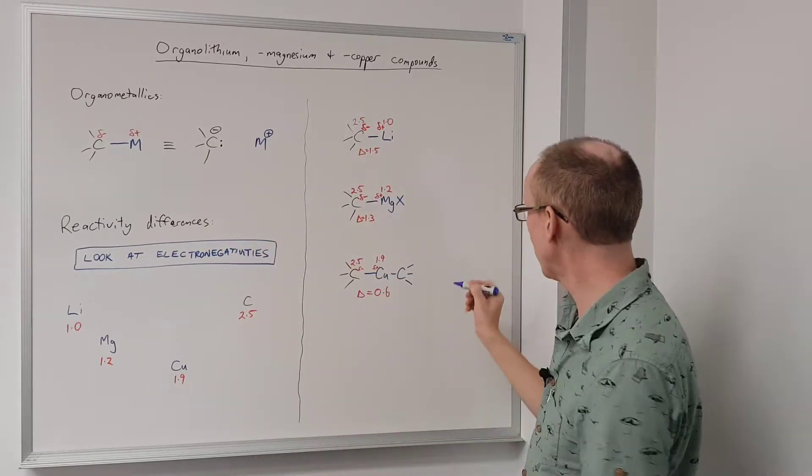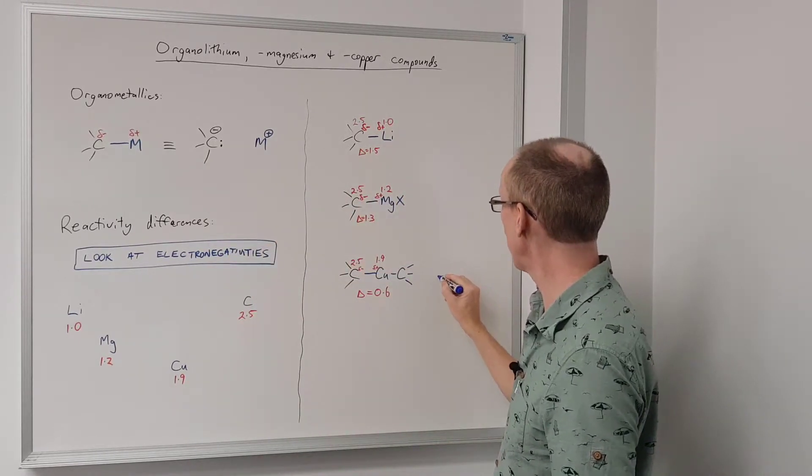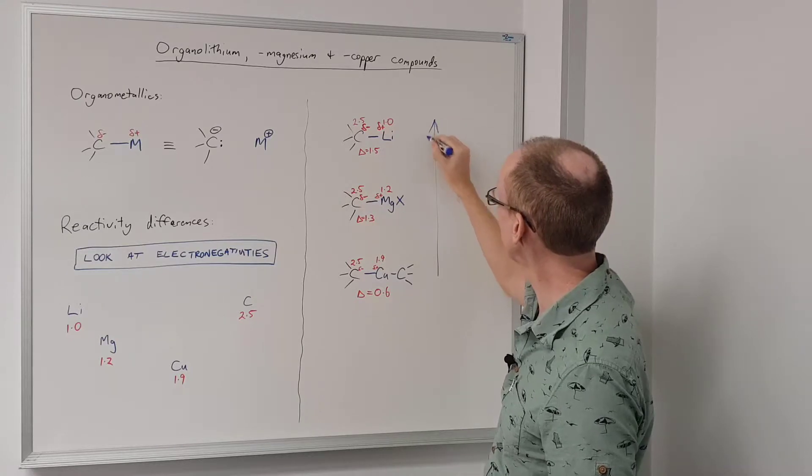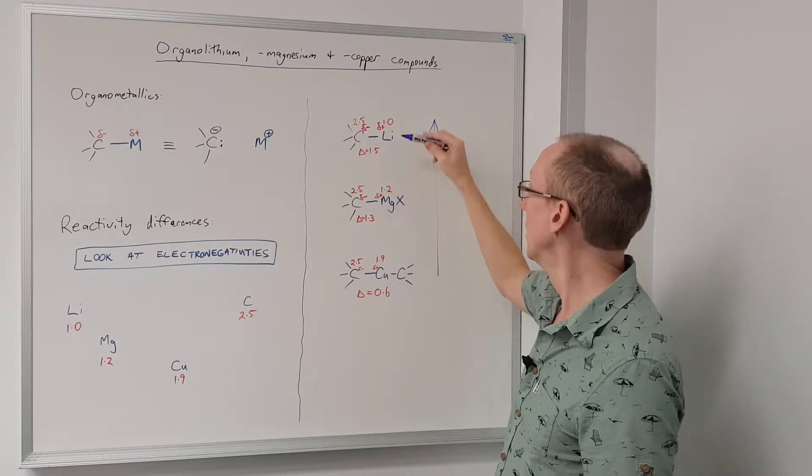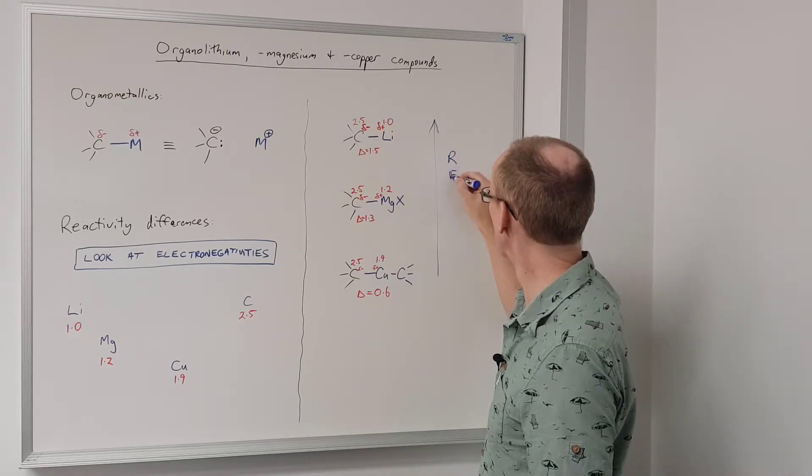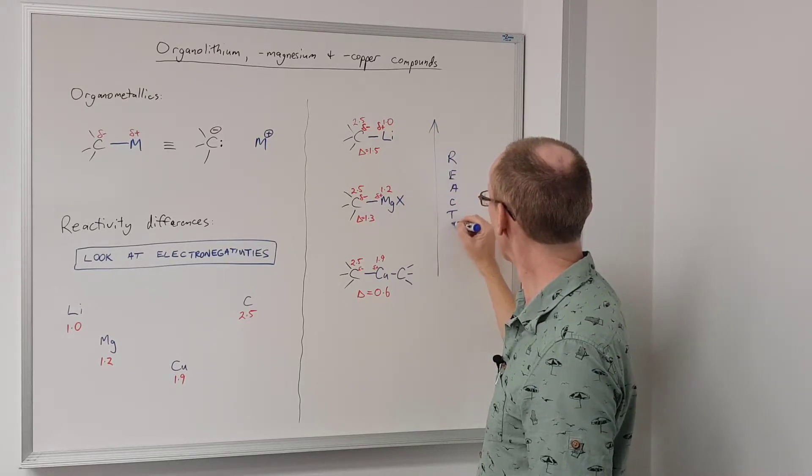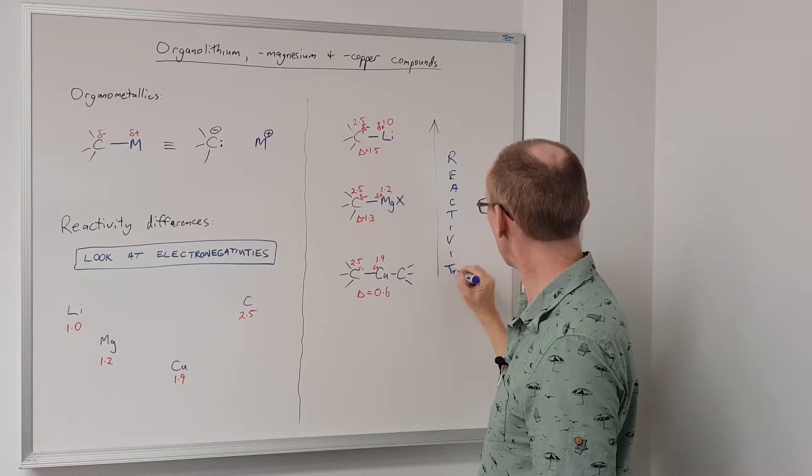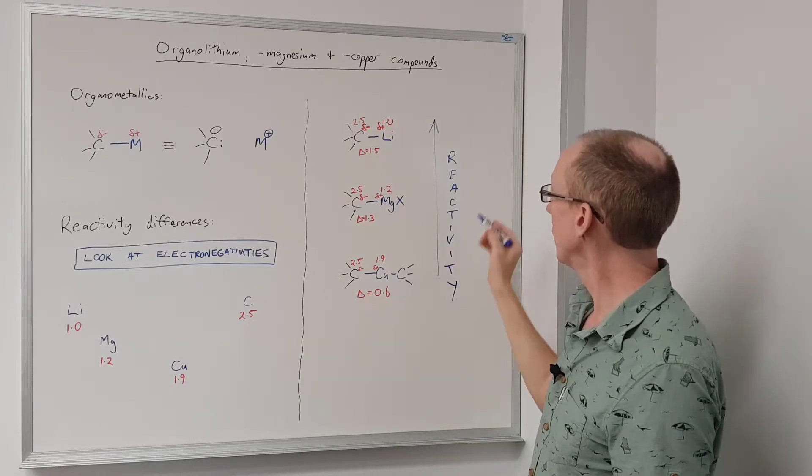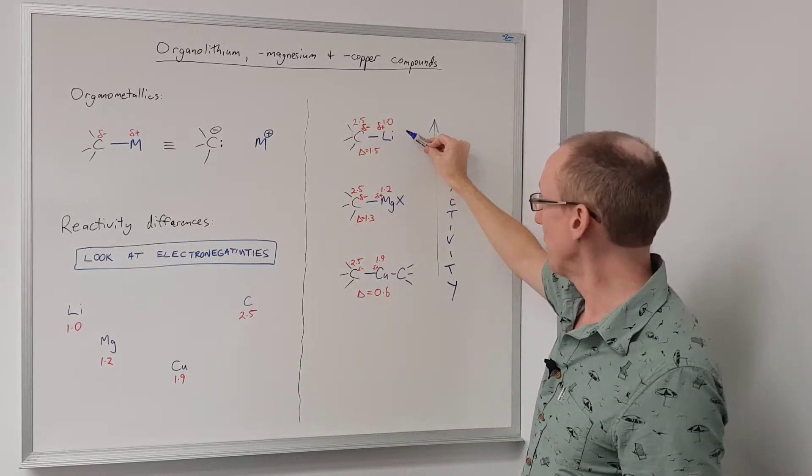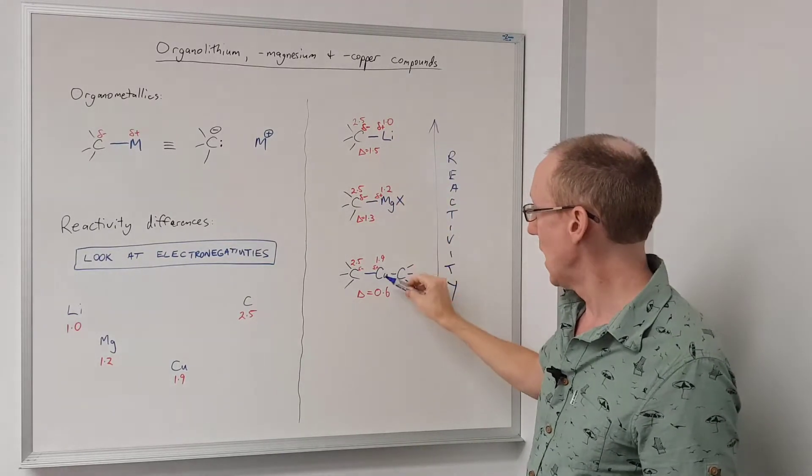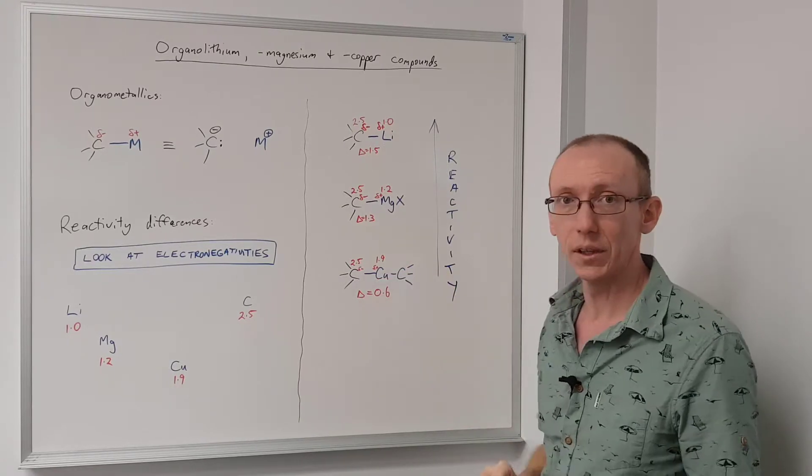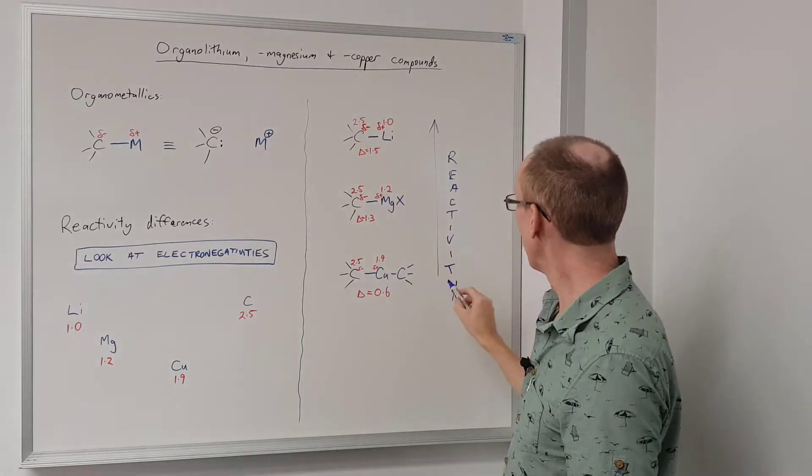And therefore, if we look at the reactivity of these, we would expect the reactivity to increase as we go from the organocopper to the organomagnesium to the organolithium. So organolithiums are going to be the most reactive, then organomagnesiums, Grignard reagents, and then organocopper reagents, which in this case I've drawn as a Gilman reagent.